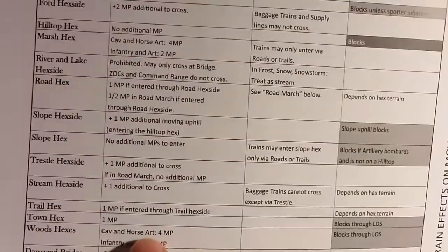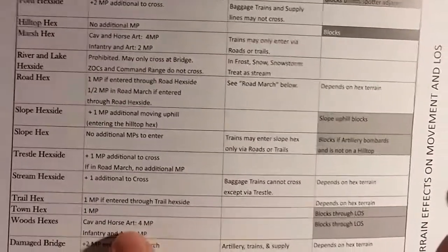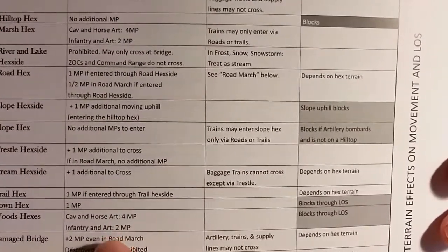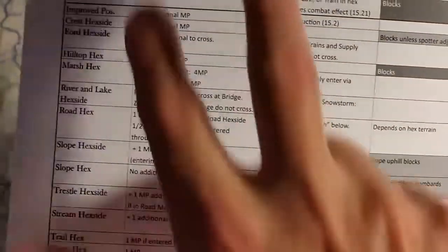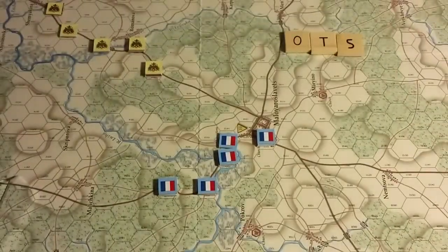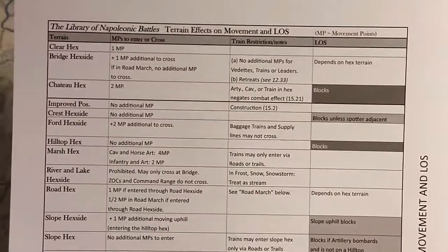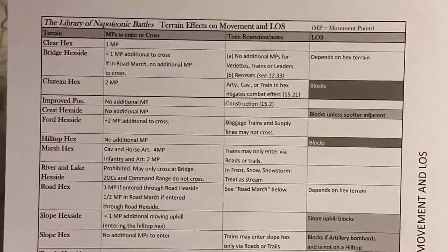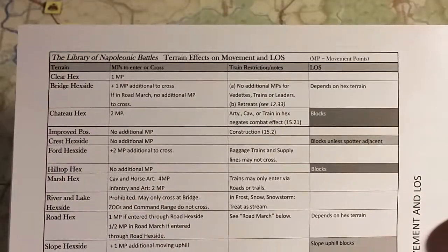Terrain movement costs are expressed as MPs to enter or cross terrain, with infantry and cavalry costs presented in the text rather than separate columns — I was looking for separate columns but they're integrated.